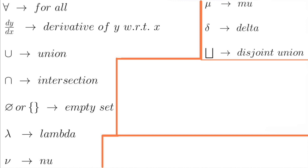As I already used this symbol, this upside-down A denotes for all. dy over dx is the notation of the derivative of y with respect to x. Big U means union, and the upside-down big U means intersection. The empty set has these two representations.